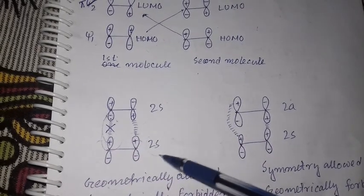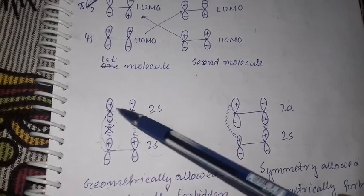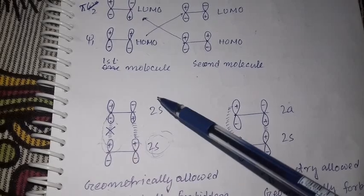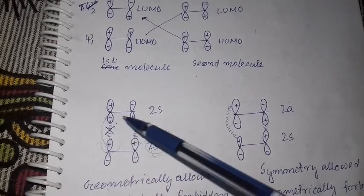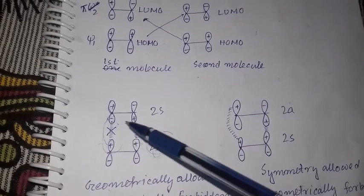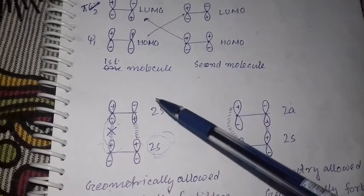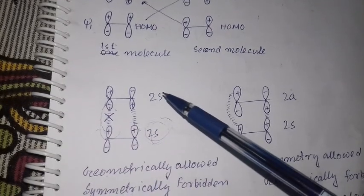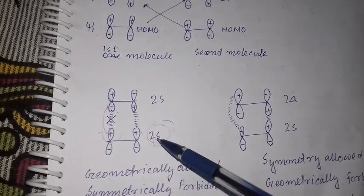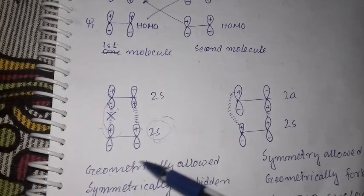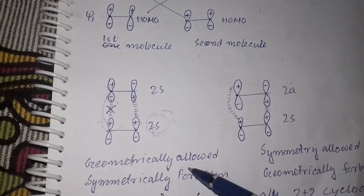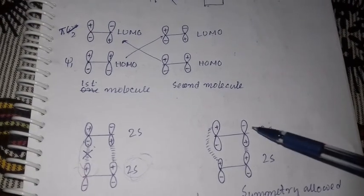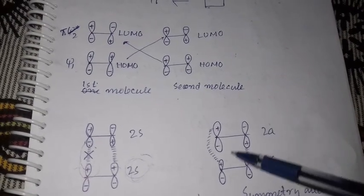Since same-phase lobes are interacting on both molecules, this is suprafacial on both components. This 2S + 2S transition is geometrically allowed but symmetry forbidden.